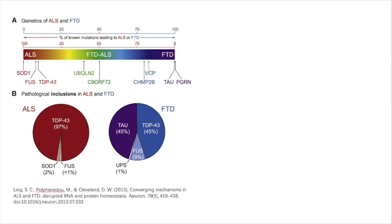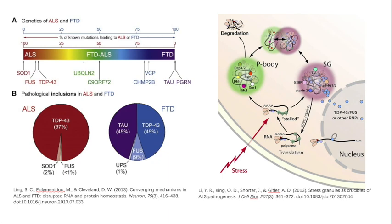However, the disease mechanisms are still largely unknown. Recently, TDP-43 and FUS have been identified in stress granules, a cytoplasmic RNA-protein complex which often appears under stress conditions to temporarily cease RNA translation initiation, underscoring that misregulation of stress granule processing could be pathogenic.